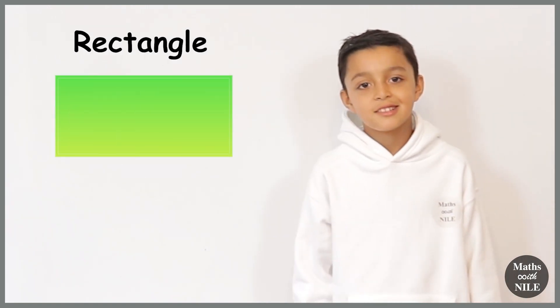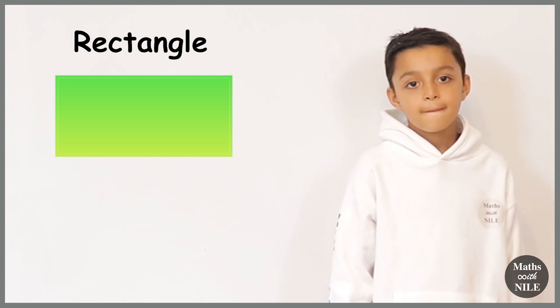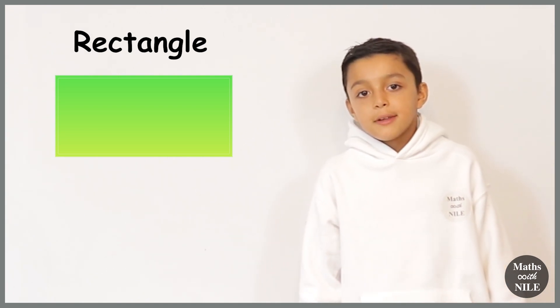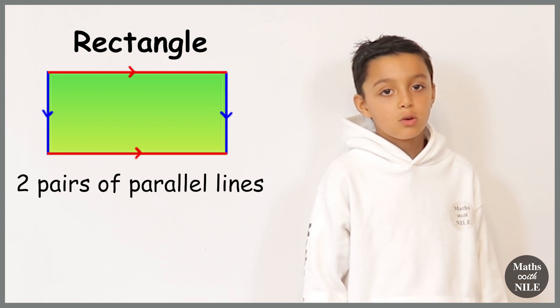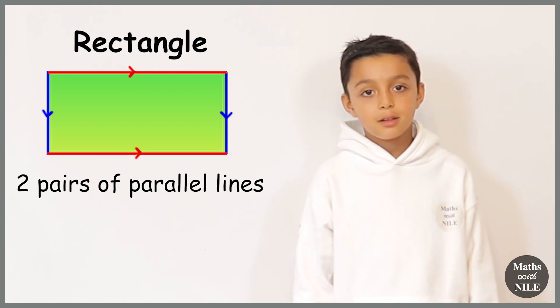So, quadrilateral is a shape of four sides. Can we go through some of the quadrilaterals and their properties? Okay, tell me a quadrilateral that you know. Rectangle.